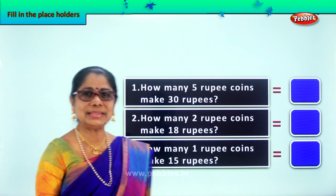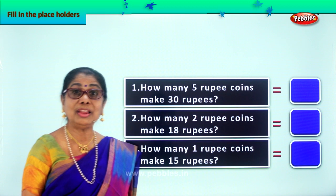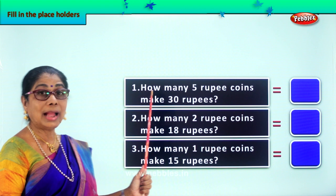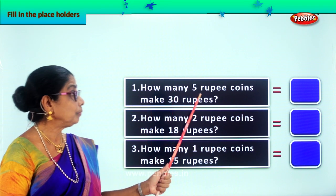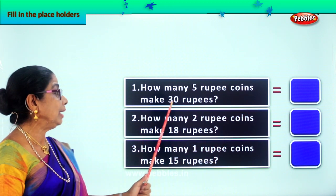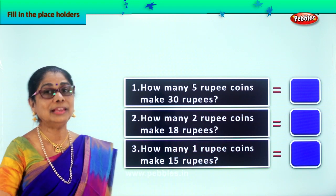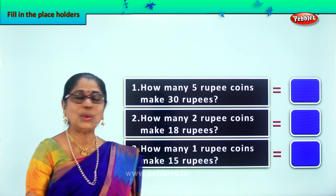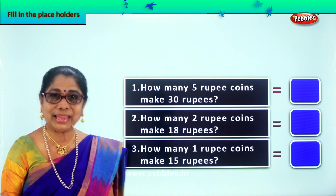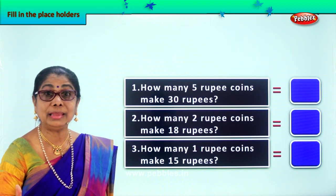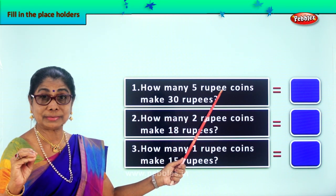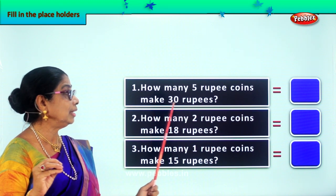Look, our first sum is — look carefully, read correctly. First one: how many 5-rupee coins make 30 rupees? And here you need tables. We have already learned tables. We have done coins and rupees in Indian currency. So we have to read correctly. How many 5-rupee coins in Indian currency make 30 rupees?